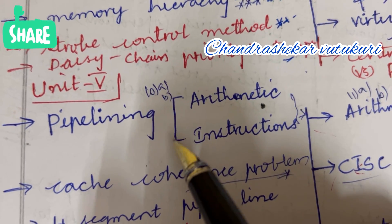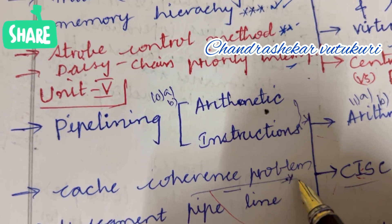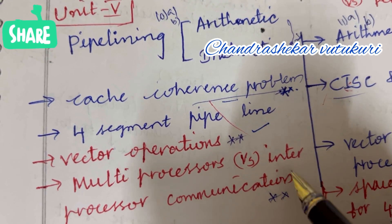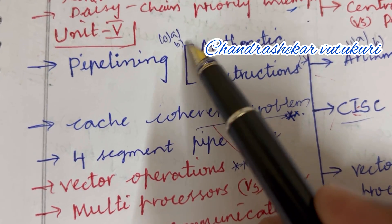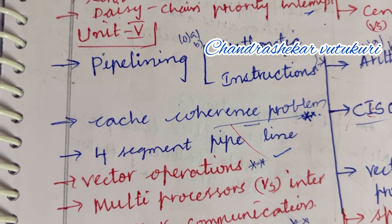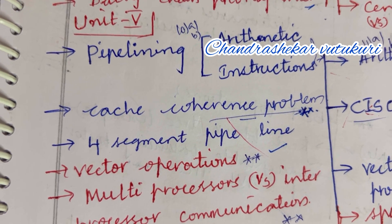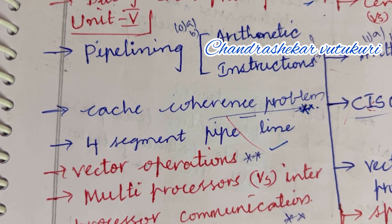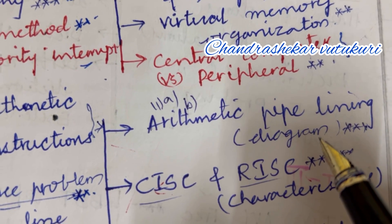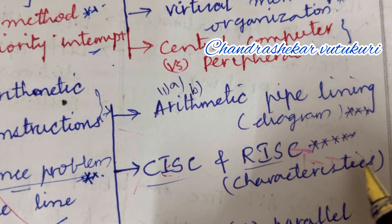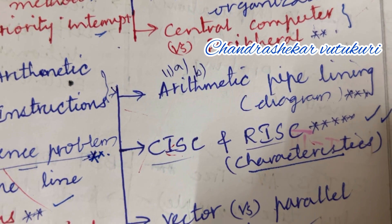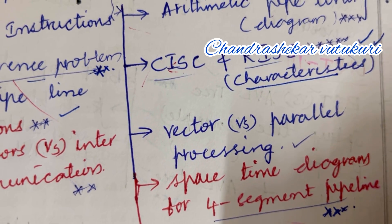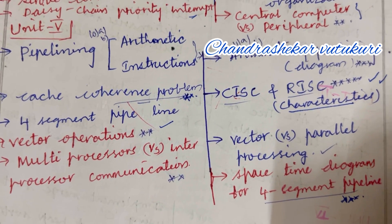For Unit 5, question number 10AB: pipelining — arithmetic as well as instruction pipelining — and cache coherence problem are set as the topmost question. Four-segment pipeline vector operations is a short question. Multiprocessor versus inter-processor communication differences are set as the topmost question in 10AB. Do not expect a direct 10-mark question — it is a split of five and five. Arithmetic pipeline diagram is set as the topmost question for 11AB. CISC and RISC characteristics may be short or long this time for sure. Vector versus parallel processing as well as space-time diagram for a four-segment pipeline are set as very important topmost questions.